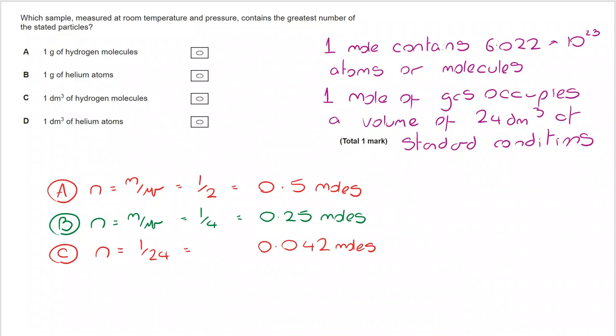But actually one decimetre cubed of helium atoms would also come to 0.042. All we now have to do is take a look at which of those is largest and the correct answer as we can see is A.